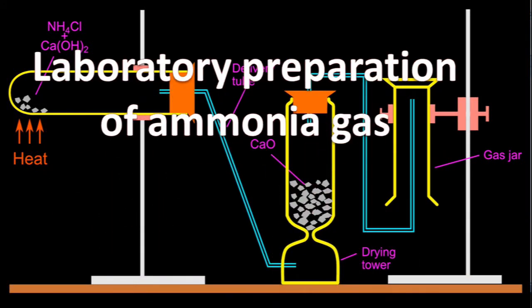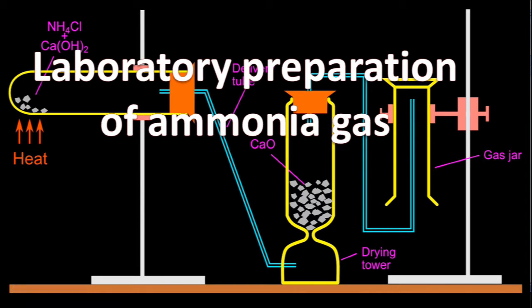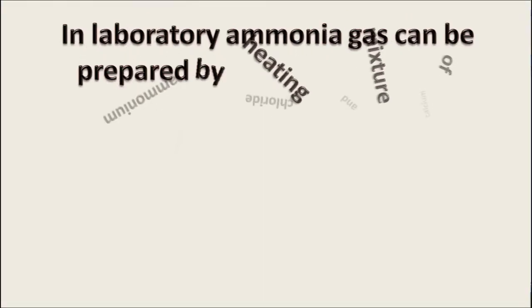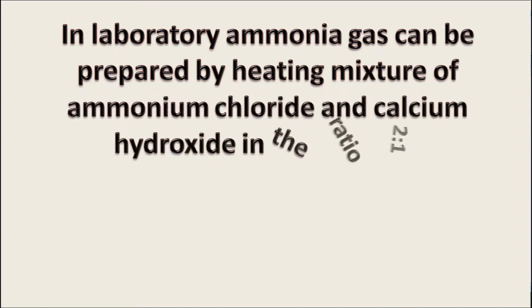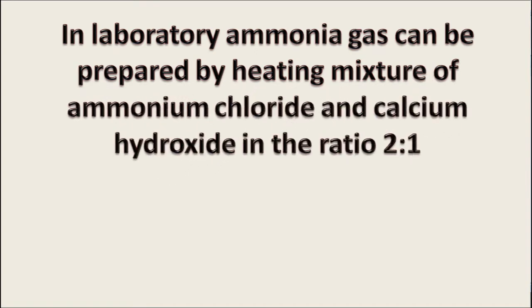Laboratory preparation of ammonia gas. In a laboratory, ammonia gas can be prepared by heating a mixture of ammonium chloride and calcium hydroxide in the ratio 2:1.